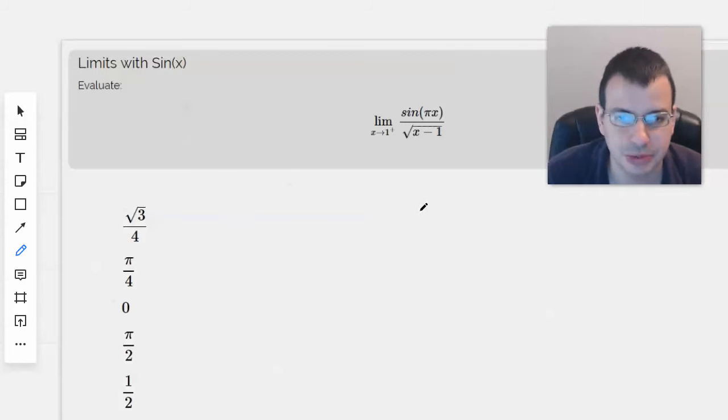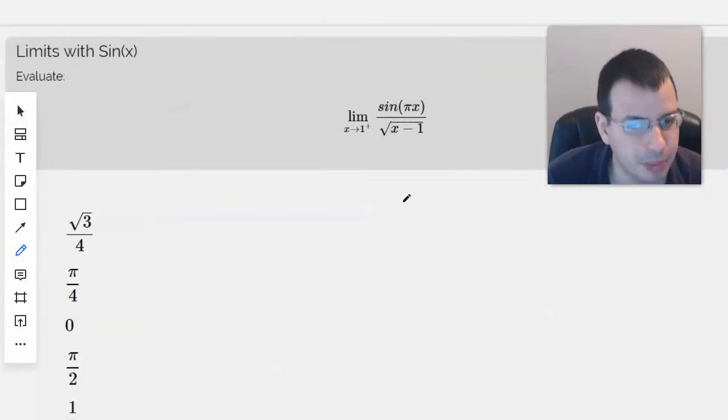Evaluate the limit as x approaches positive 1, 1 plus. Sine of pi x all over the quantity x minus 1 square root it.